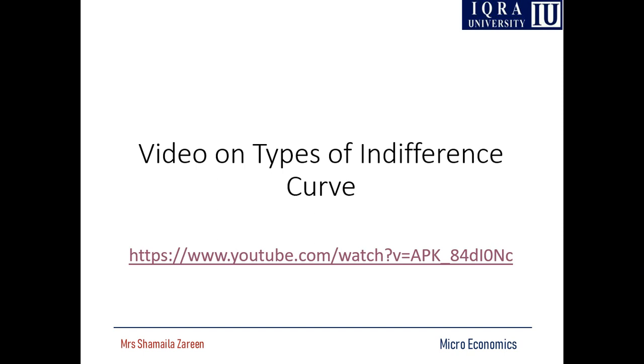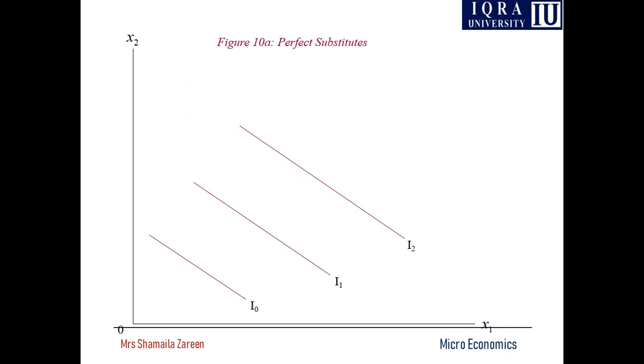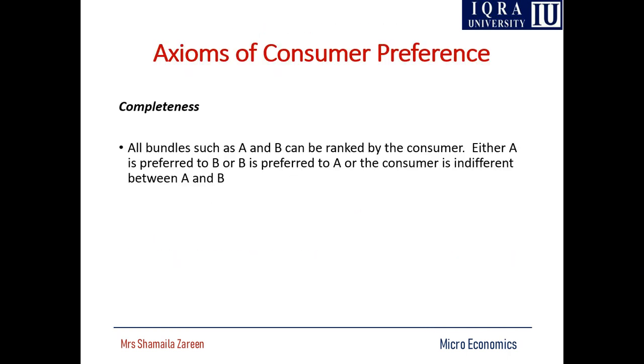This is about the types of indifference curves — perfect substitutes and perfect complements are two extreme cases. In these extreme cases, the marginal rate of substitution does not fall.